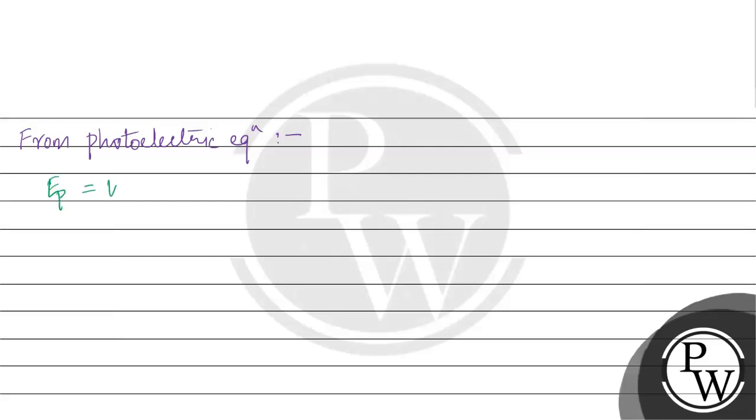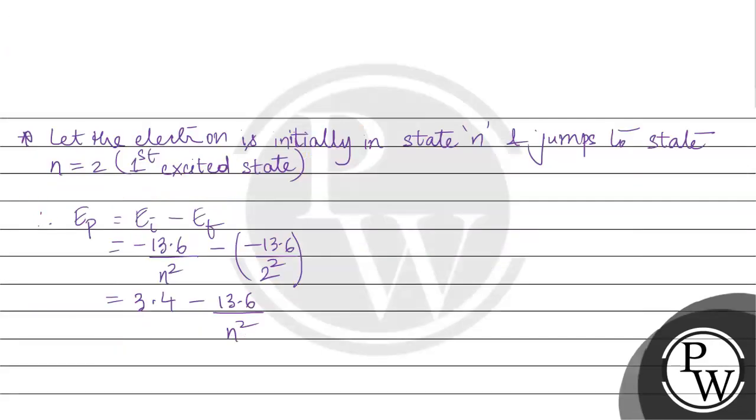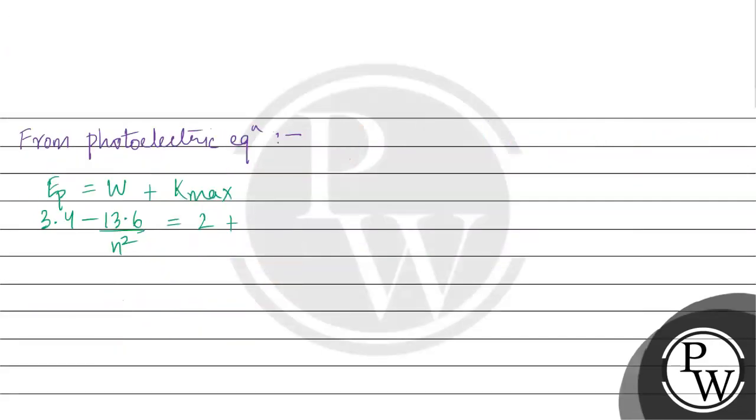From photoelectric equation, we have 3.4 - 13.6/n² equals the work function 2 eV plus K max, which is 0.55 eV.